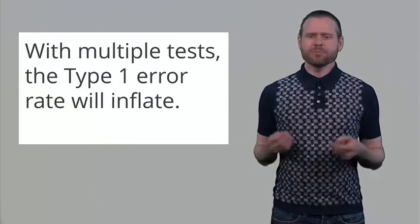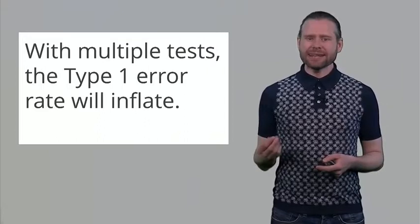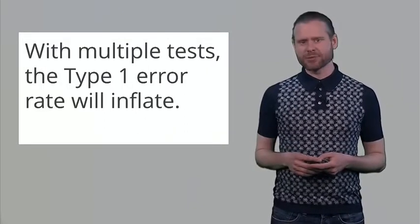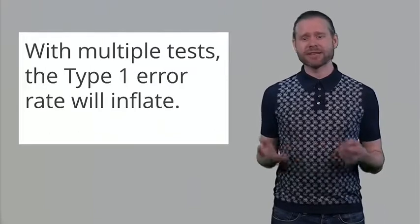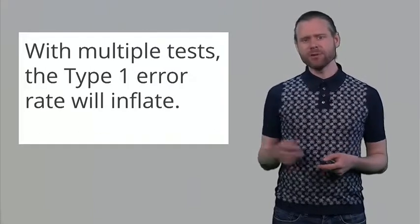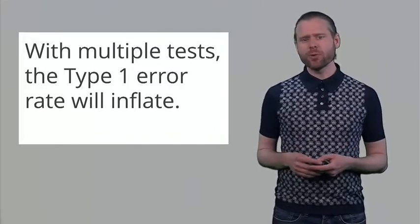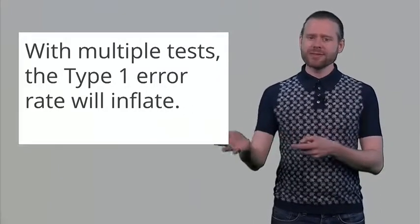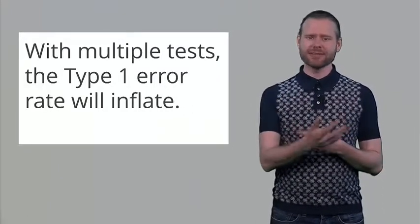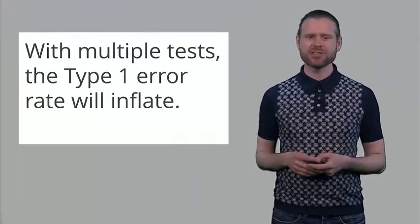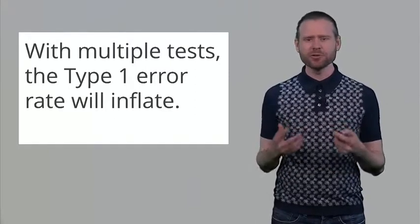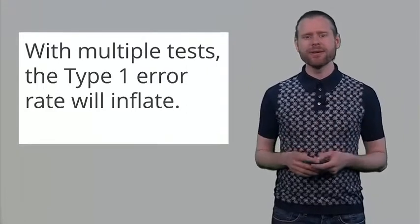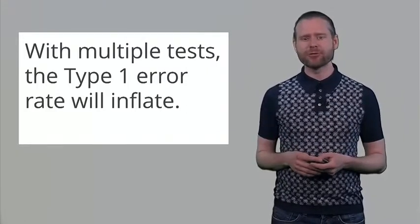One problematic aspect that inflates the Type 1 error rate — increasing the number of times you will say there is an effect when there is actually nothing going on — is when you make multiple comparisons. You collect some data and do one test, then another test, then another. In this multiple testing situation, the probability of saying something is going on somewhere inflates well beyond the 5% level.